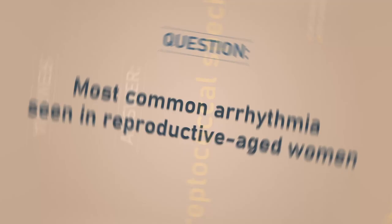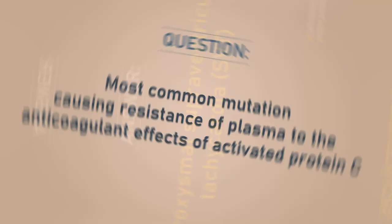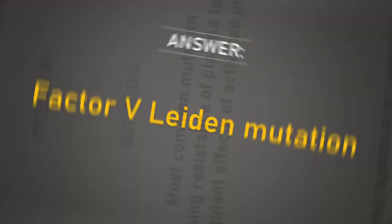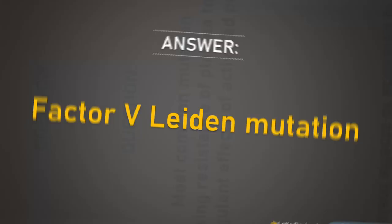Most common arrhythmia in reproductive-aged women: paroxysmal supraventricular tachycardia. Most common mutation causing resistance of plasma to the anticoagulant effects of activated protein C: Factor V Leiden mutation.